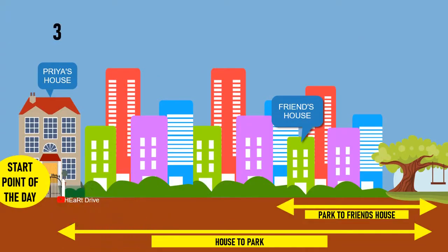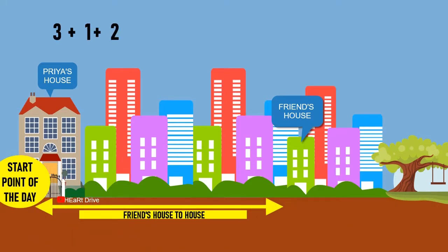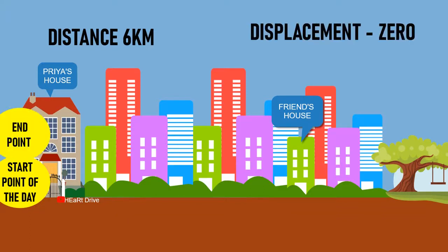From her friend's house, Priya returns home. The distance equals three kilometers plus one kilometer plus two kilometers, which totals six kilometers. Now Priya is back at her home — since the start point and end point are the same, there is no displacement. So the displacement value is zero kilometers.